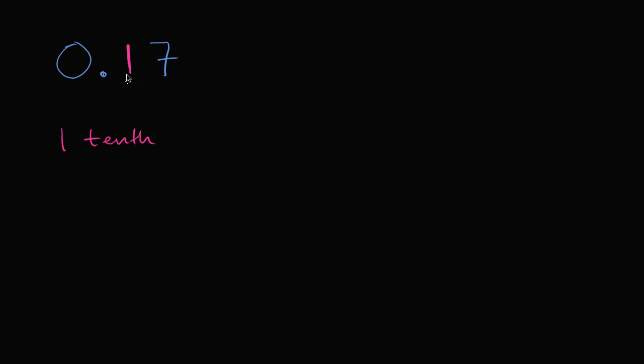There are actually a couple of ways that we could say this number. One is just to say 0.17. Another way is to say: I have a one in the tenths place, so that's going to be one tenth, and I have a seven in the hundredths place. So I could say one tenth and seven hundredths. That's one way to say this number.